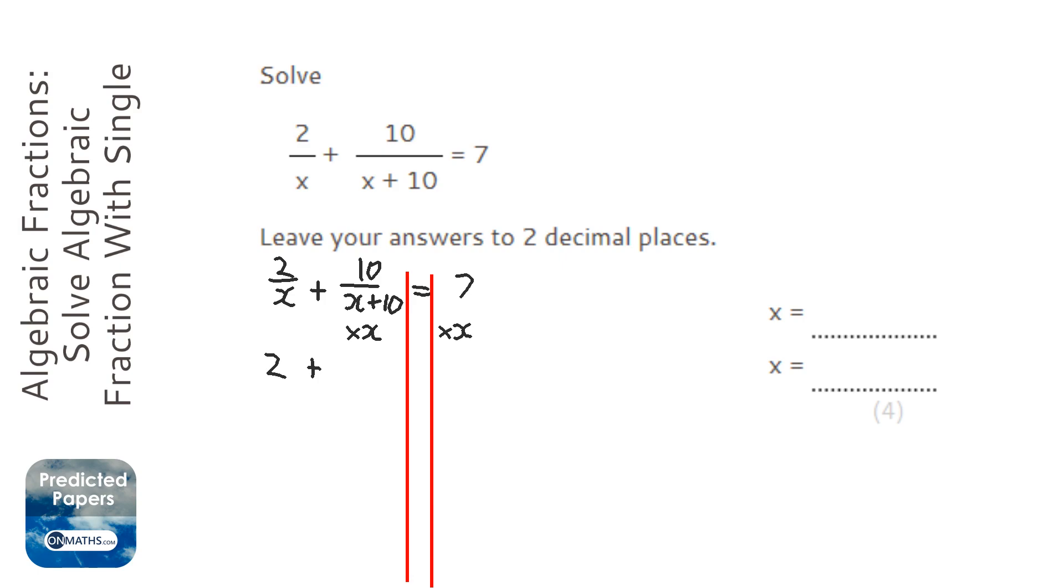Now whenever you times a fraction by something, you times the top by it. So that becomes 10x over x plus 10. The bottom doesn't change. And now I've got times this by x as well.